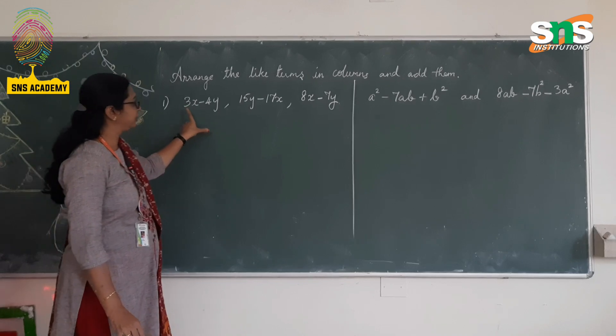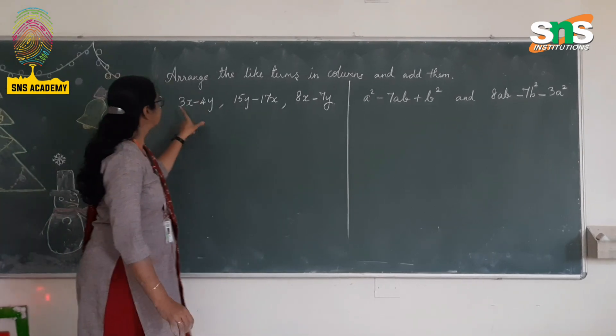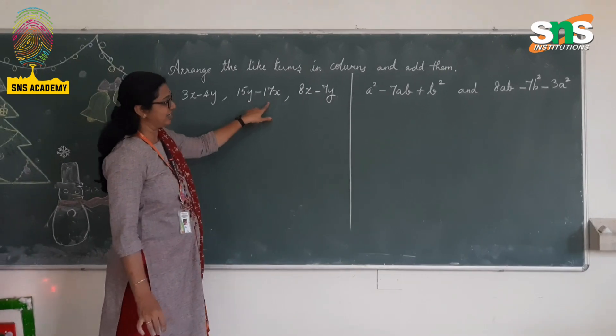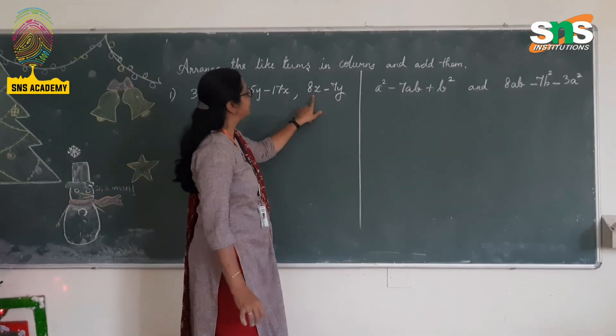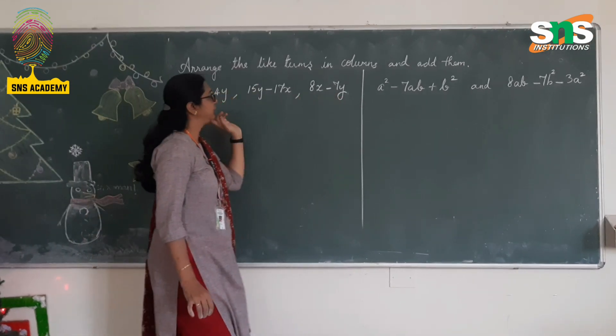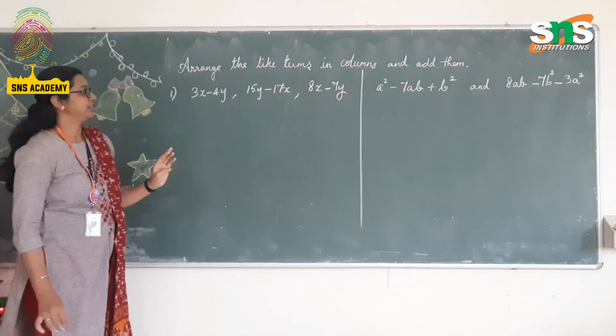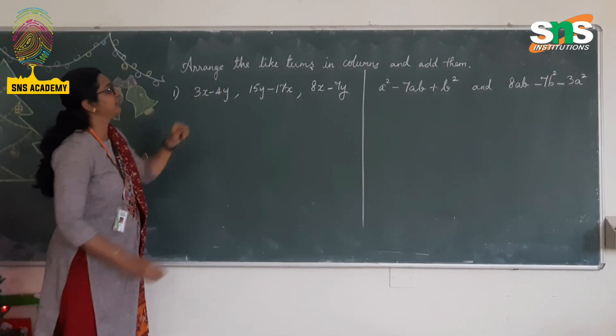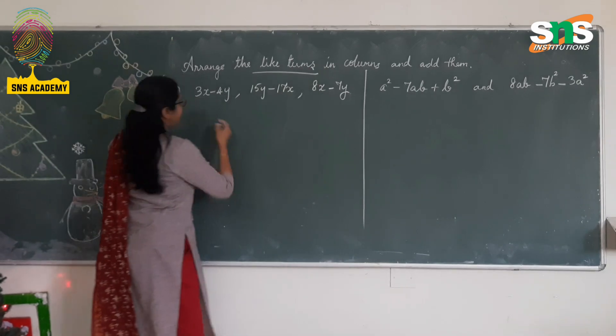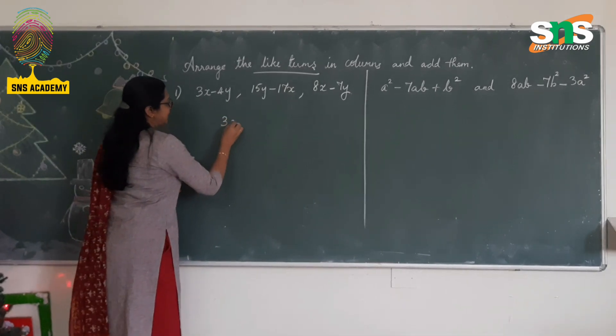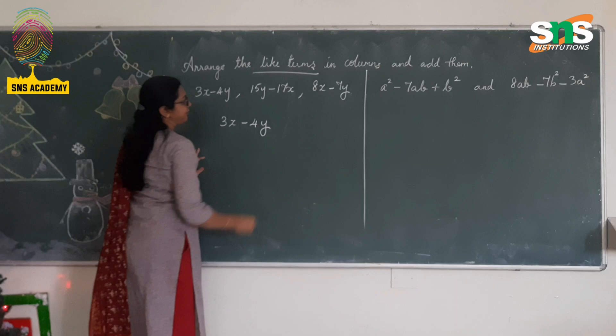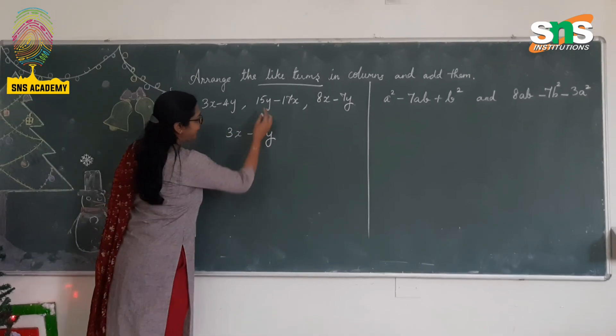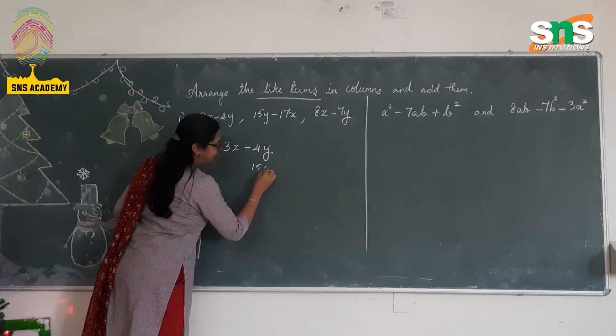In this first question, we have three expressions given here: 3x - 4y, 15y - 17x, and 8x - 7y. Therefore, three binomial expressions. You have to rearrange them in columns by checking the like terms. First, the first expression is 3x - 4y. The second expression is 15y, so you write 15y under this y term.